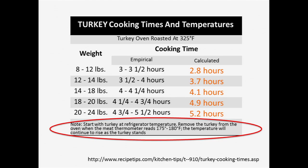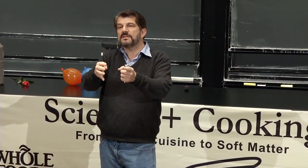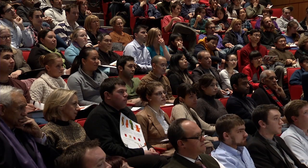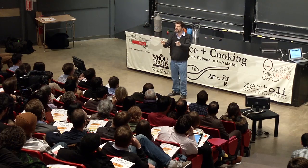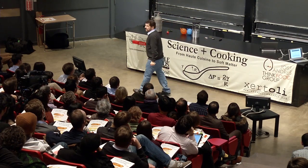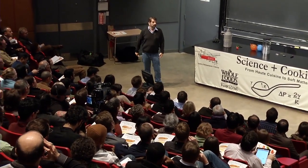Notice that it says the temperature will continue to rise as the turkey stands. The reason is you have a gradient of heat—it's hottest on the outside, coolest on the inside. Even if you take the turkey out of the oven, it has to come to uniform temperature, so heat from the outside continues to cook the inside. That's the nature of heat diffusion through the turkey.